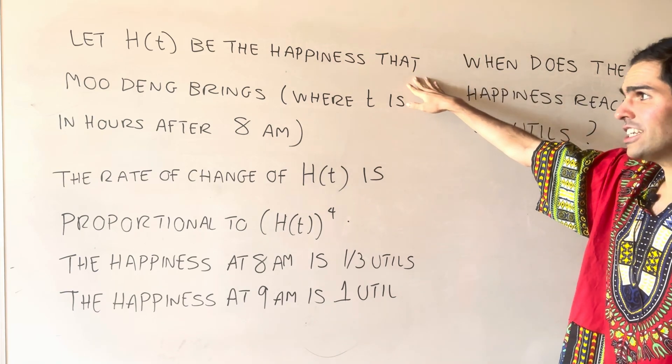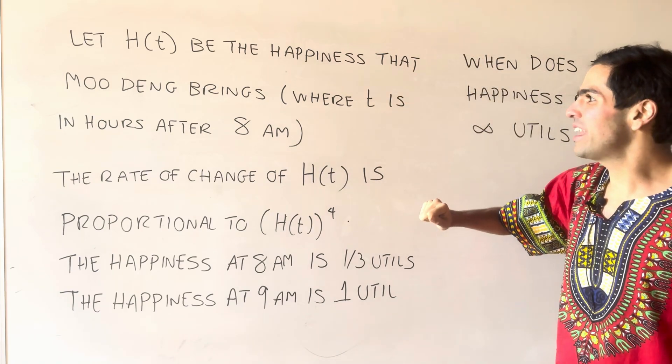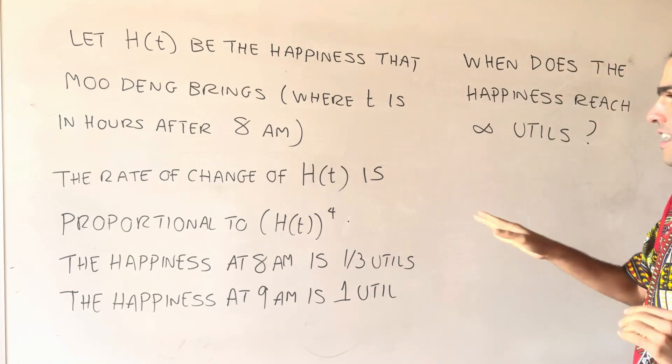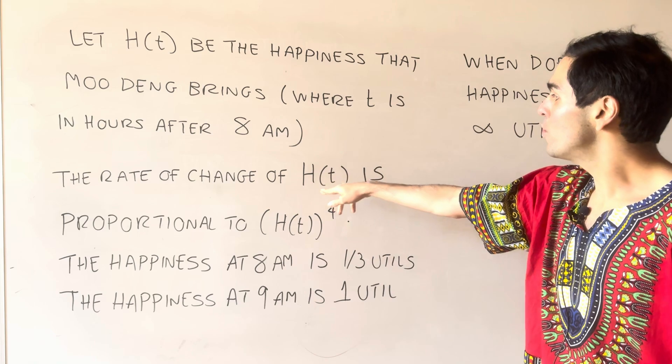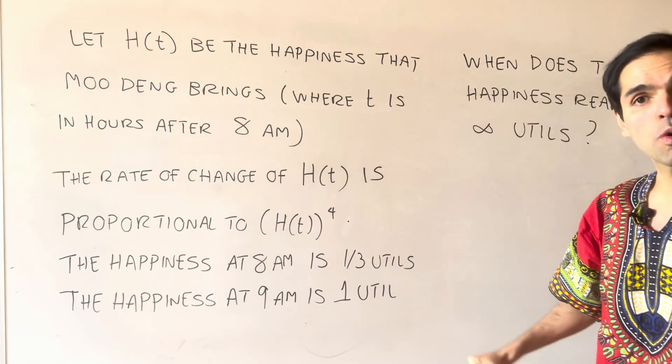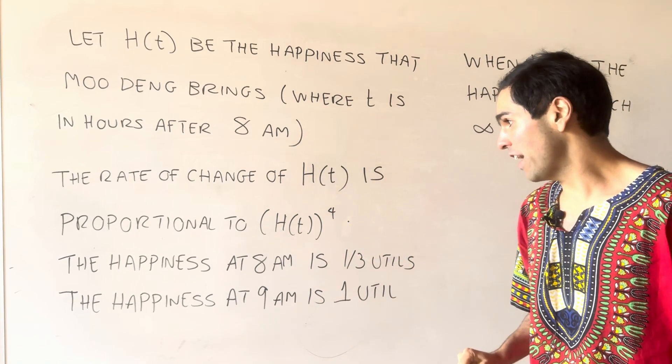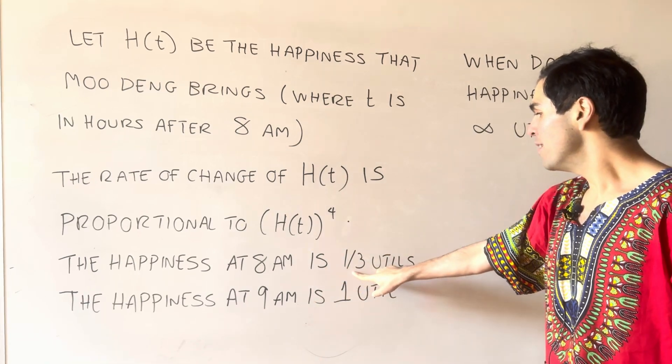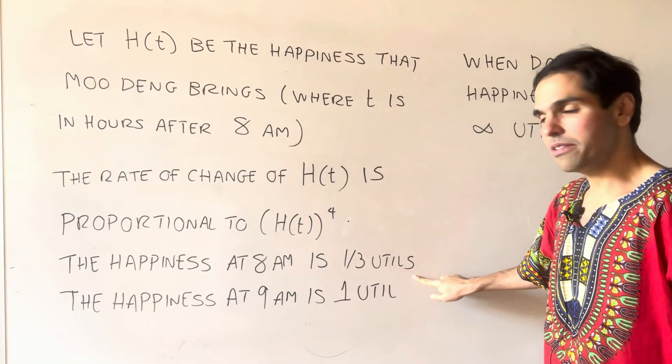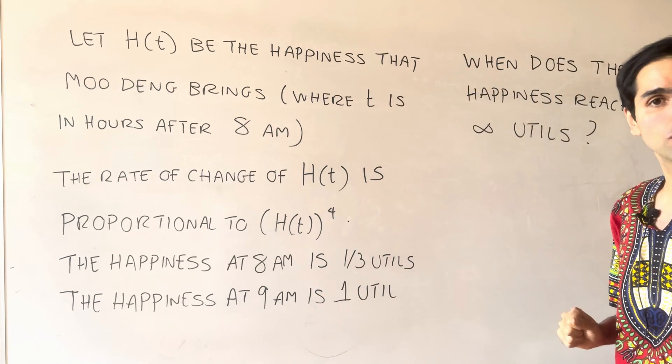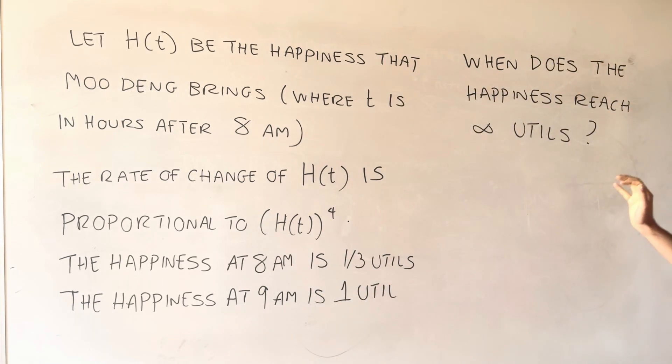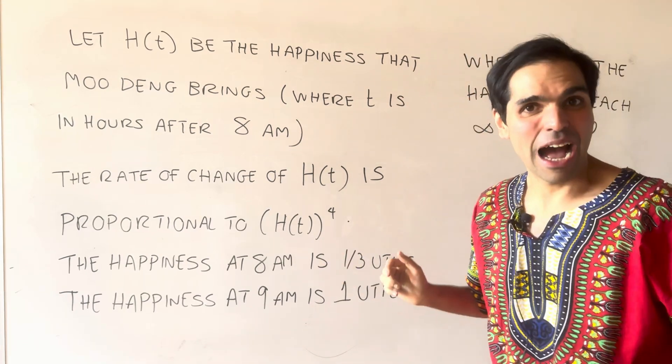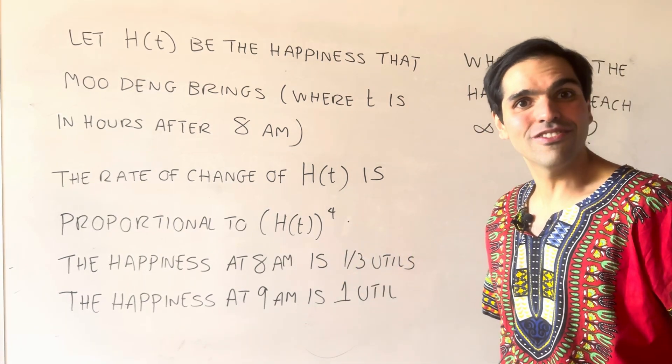So let H be the happiness that Mudank brings, where T is in hours after 8 a.m., and assume that scientists have measured that the rate of change of H is proportional to the fourth power of H. Moreover, the happiness at 8 a.m. is one-third utility points, and at 9 a.m. is one utility point. And the question is, when is Mudank infinitely happy, or when does she bring infinite happiness?